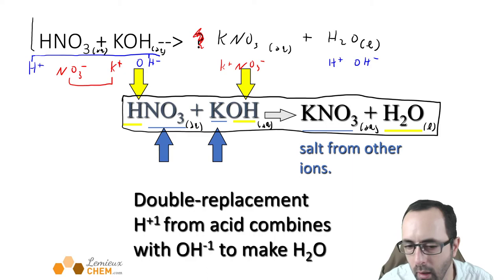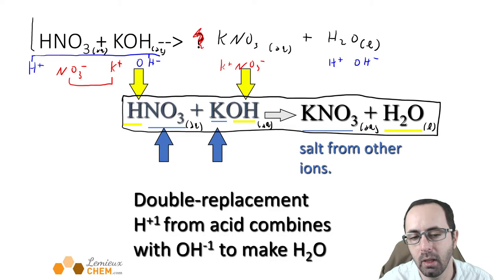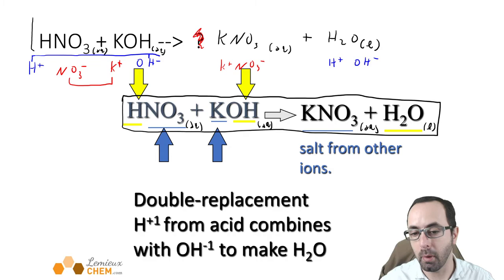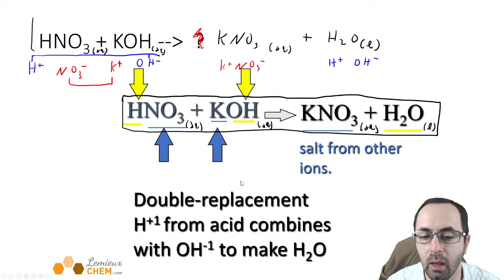Acid-base reactions are super important — we'll have a whole chapter about acids and bases later. These types of reactions happen all the time in biological chemistry and organic chemistry. Your stomach has acid in it, which is neutralized by eating bases like antacids. So these are really important to the body and to industry as well.